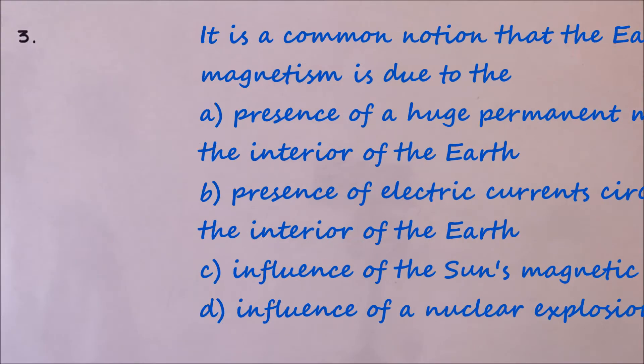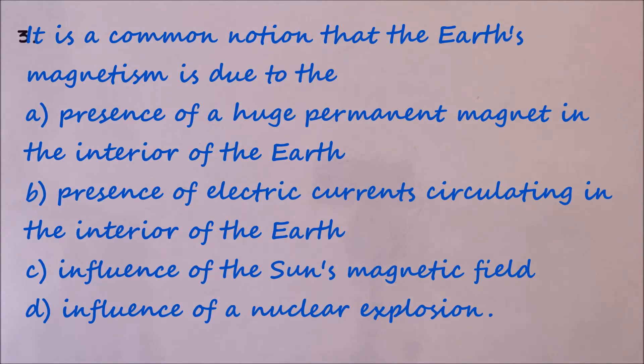Let's take another question. Question number three: It is a common notion that earth's magnetism is due to: A, the presence of huge permanent magnet in the interior of the earth; B, the presence of electric current circulating in the interior of the earth; C, the influence of nuclear explosion. So this is a common notion, not a verified fact, and the answer for this is the presence of electric currents circulating in the interior of the earth. So option B.